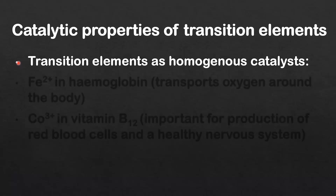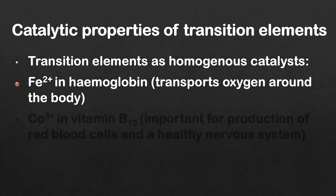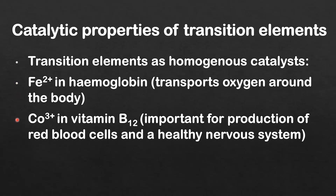Next we look at transition elements as homogeneous catalysts. First is the Fe2+ ion in hemoglobin. Hemoglobin transports oxygen around the body. Next is the cobalt 3+ ion in vitamin B12. Vitamin B12 is important for the production of red blood cells and a healthy nervous system.